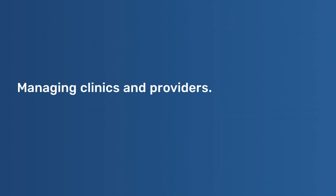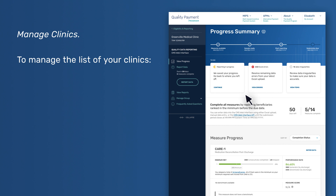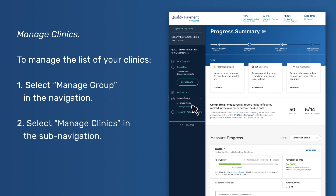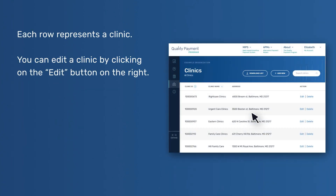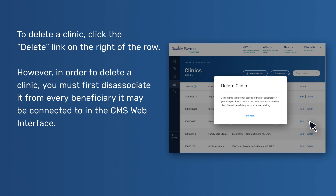To associate your beneficiaries with different or additional clinics and/or providers, you can do the following. Manage Clinics – To manage the list of your clinics: one, select Manage Group in the navigation; two, select Manage Clinics in the sub-navigation. Each row represents a clinic. You can edit a clinic by clicking the Edit button on the right. To delete a clinic, click the Delete link on the right of the row. However, in order to delete a clinic, you must first disassociate it from every beneficiary it may be connected to in the CMS Web Interface.